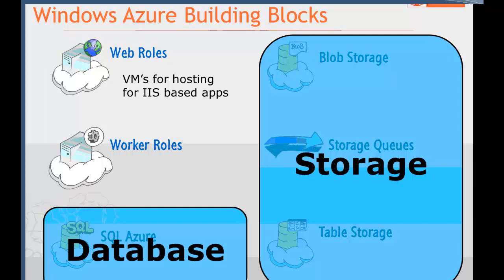The worker role is, for all intents and purposes, a VM for everything else. So if you really wanted to run Apache in Windows Azure or some kind of JVM, you could use a worker role to do that. There's no web application server pre-configured, so you can install your own and run with it.